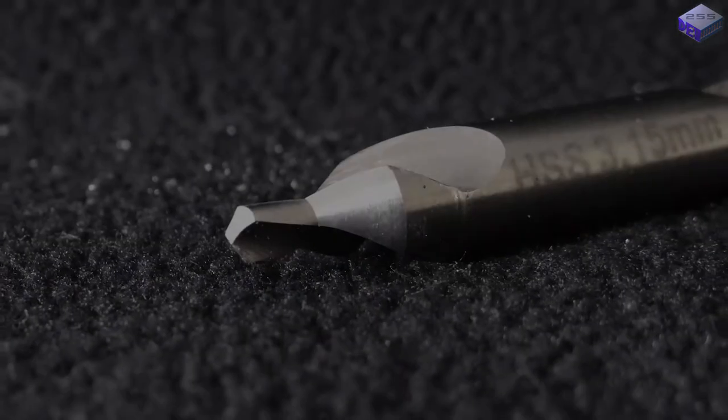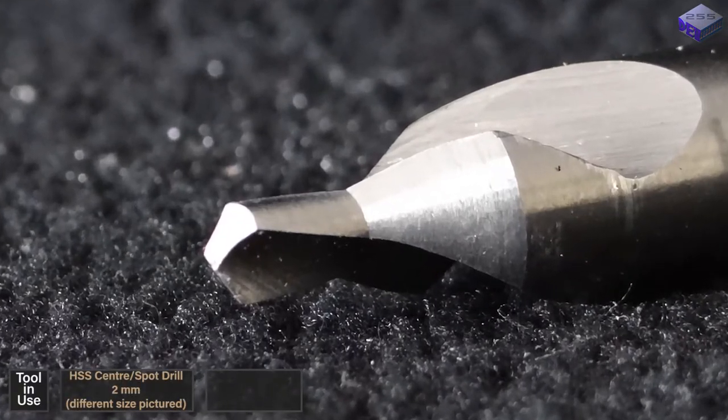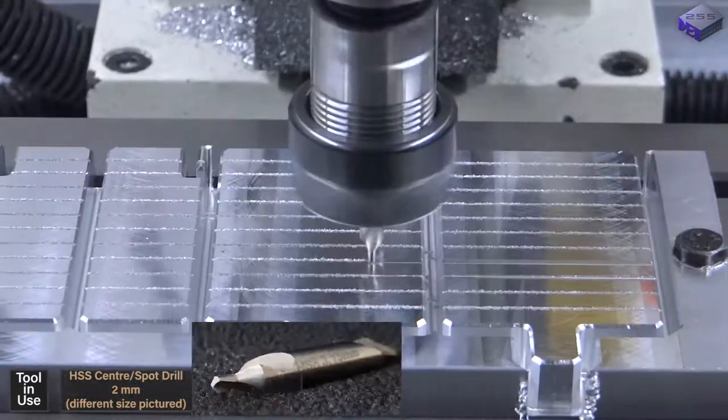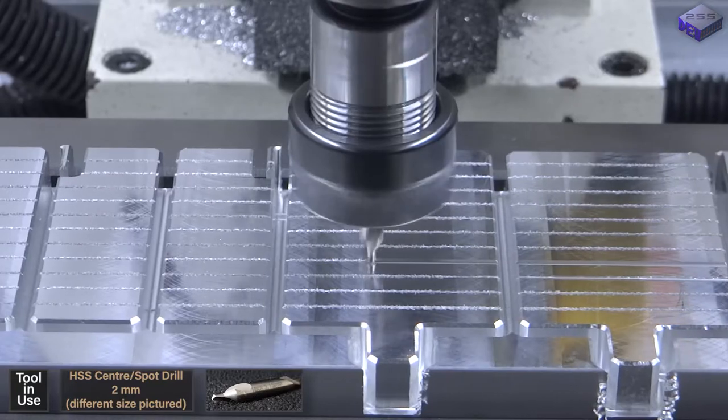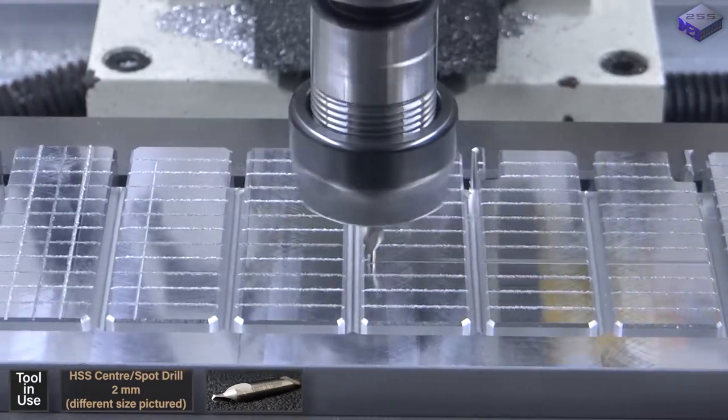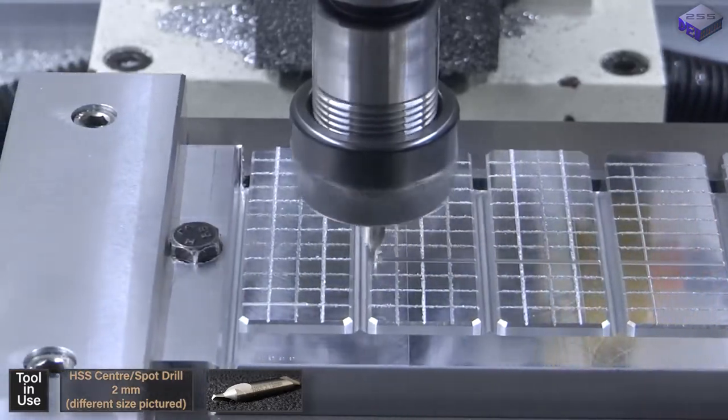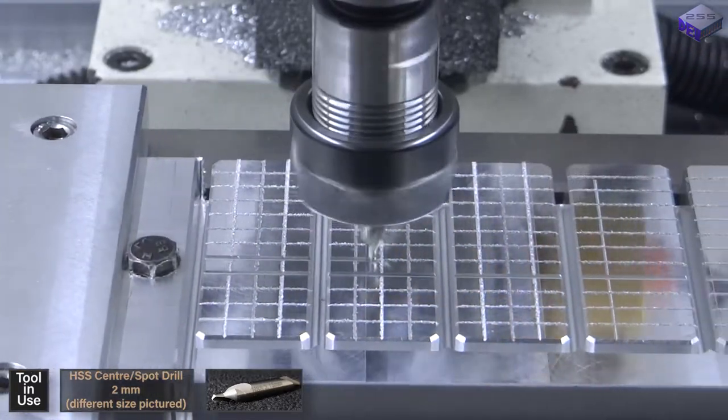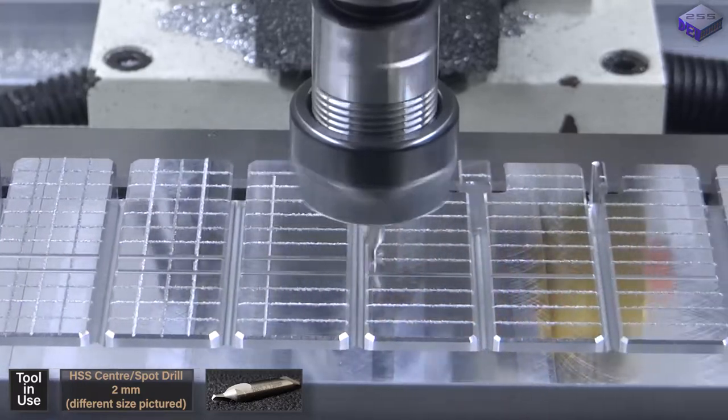So instead of using that, looking around at what else I had, I wanted to know how well a center drill or spot drill copes with milling channels. And it actually worked really well, so I'd highly recommend using a center drill as a milling bit. It could do it in one pass, which again was another time saver.